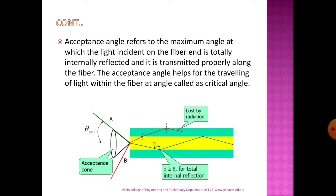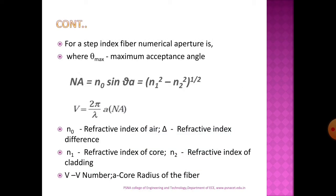The acceptance angle is the maximum angle by which a light ray will be propagated inside the fiber without deviating out of the fiber. It is an important parameter for determining the transmission of light waves inside the fiber. If the acceptance angle is proper, the critical angle will also be proper. The critical angle is the angle beyond which the light ray will be totally internally reflected.